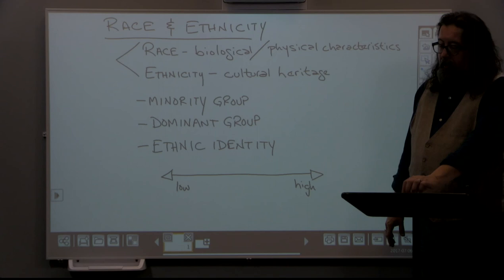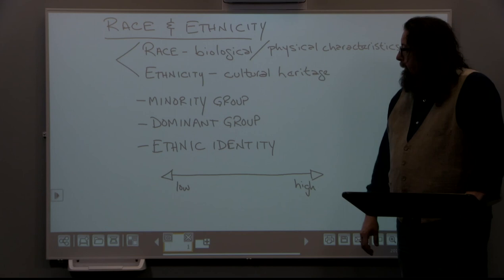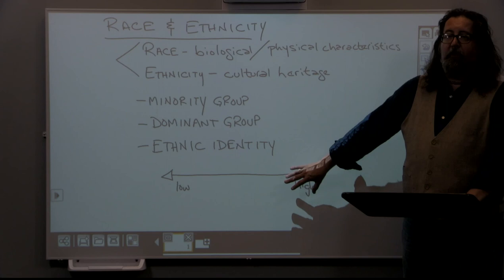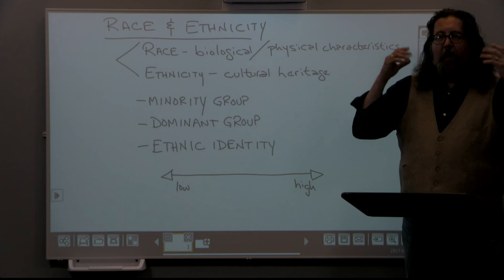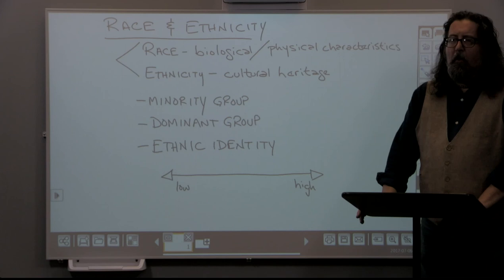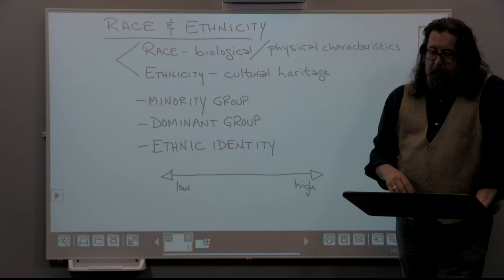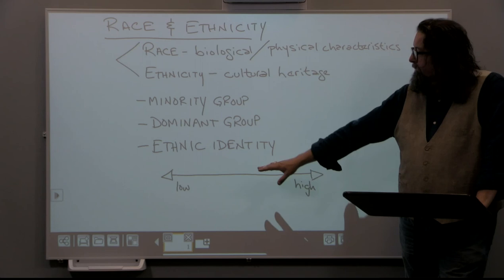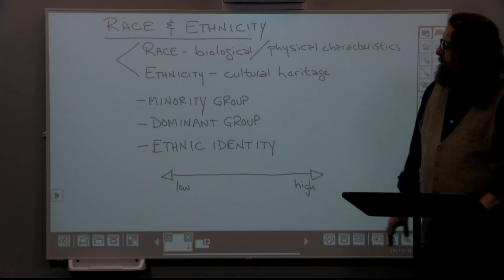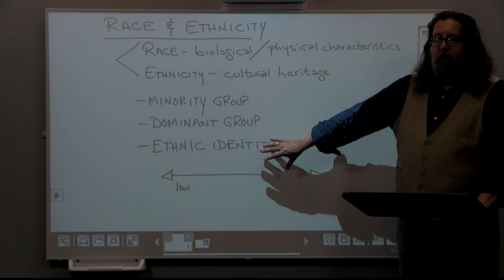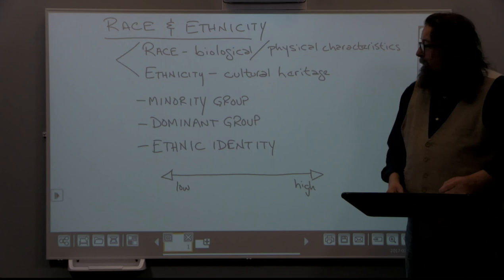Minority ethnic groups that practice a high degree of ethnic identity definitely stand out from the crowd. An example in our society might be Hasidic Judaism — Hasidic Jewish males are typically dressed in all black clothing with a hat, large beard, and hair curls which are a symbol of religious faith. Most ethnic groups can be placed on a scale from low to high in terms of practicing ethnic identity, and this can vary from time to time and among individuals.